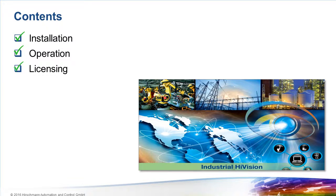That brings us to the end of this video. We've seen some powerful new features offered in Industrial HiVision version 7. These features were developed with large networks in mind, but will save time and effort for administrators of any size of network. To try these features for yourself, download Industrial HiVision from www.highvision.de. The software will run for 30 days with no license, and the evaluation period can be extended indefinitely using the 16-node promotion license. I hope you've enjoyed learning about these new features — thank you for watching.